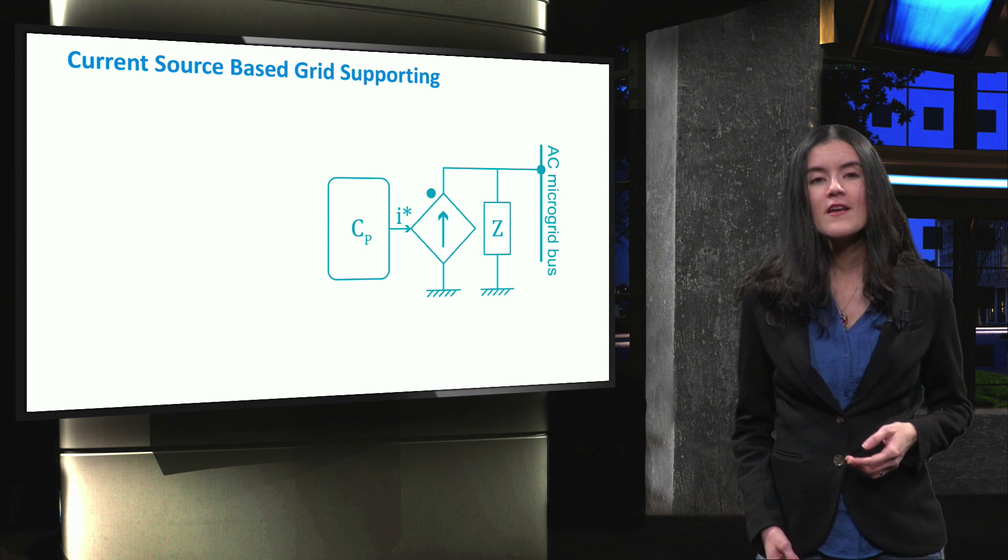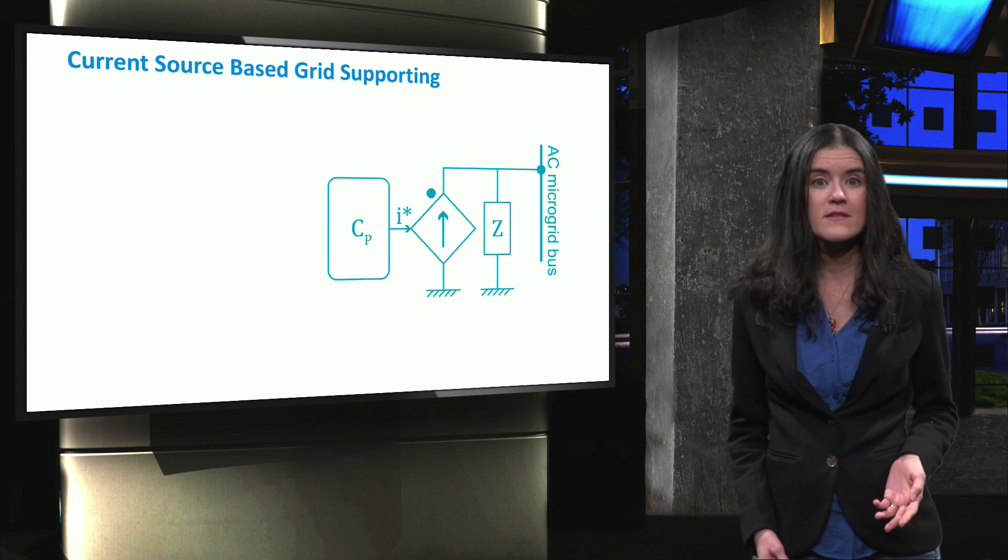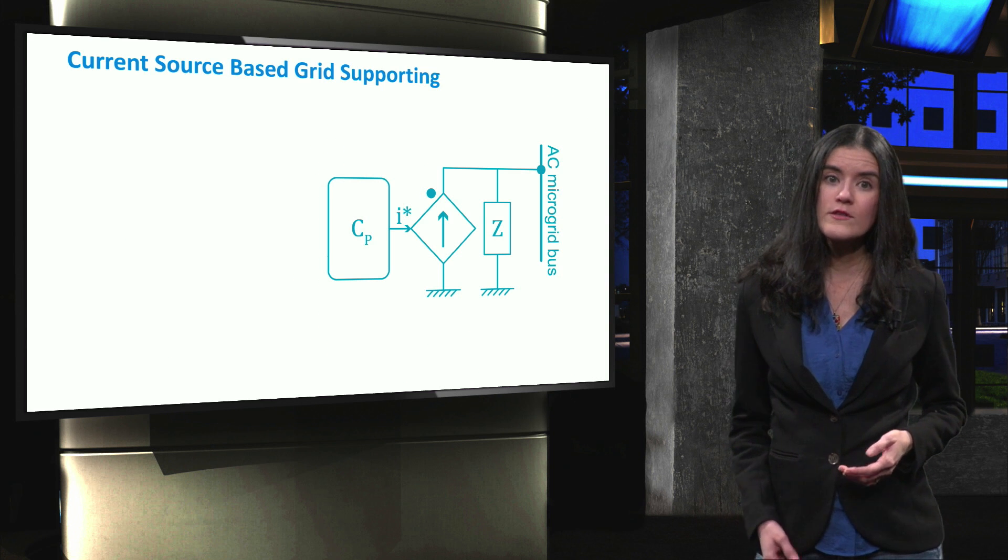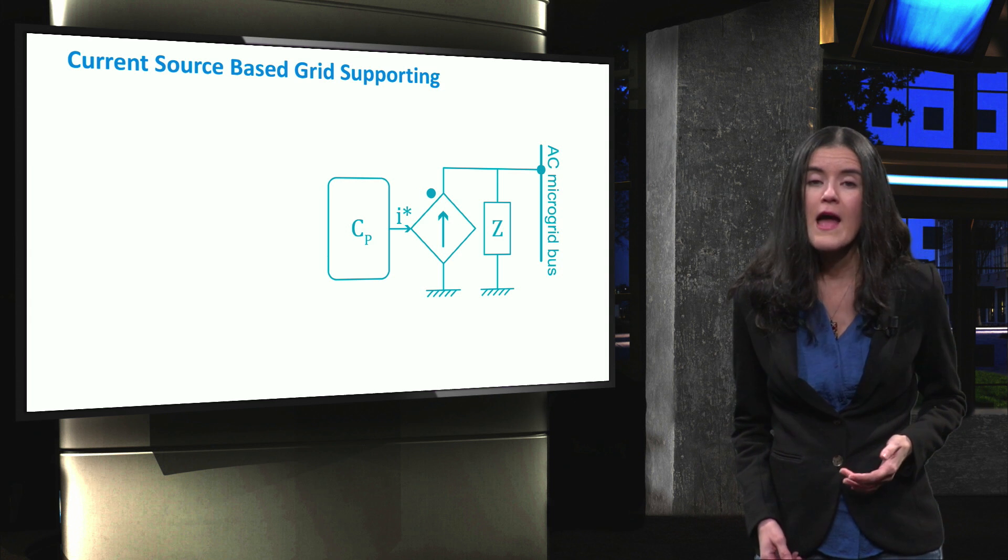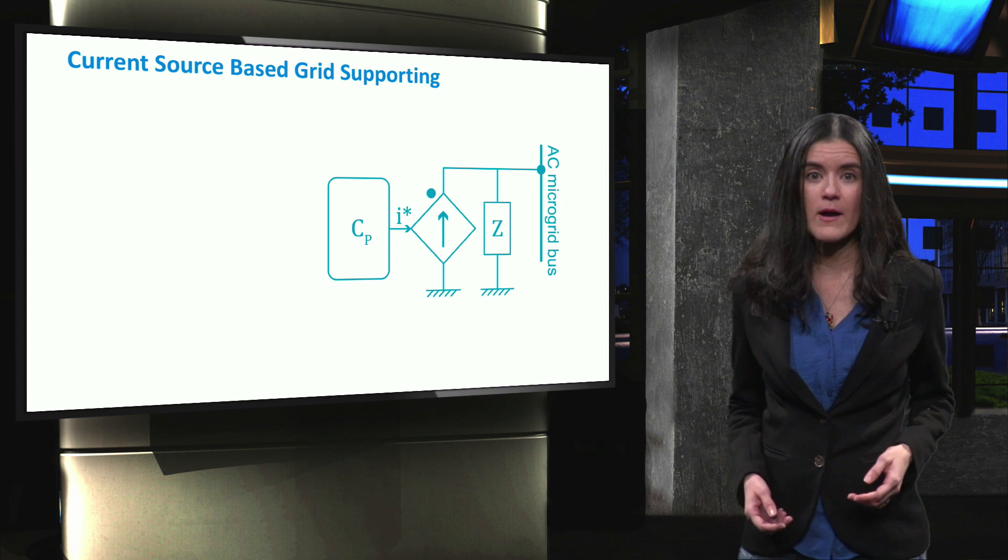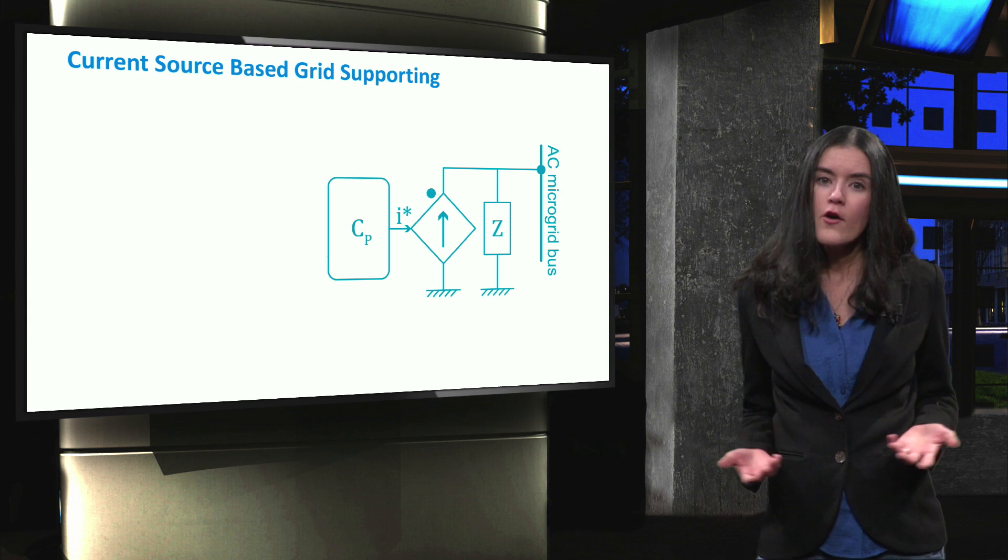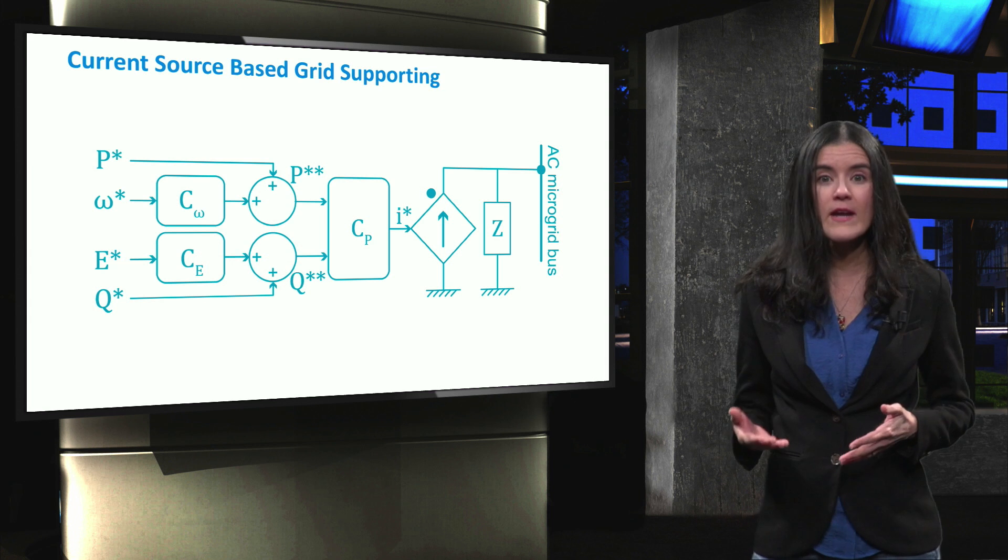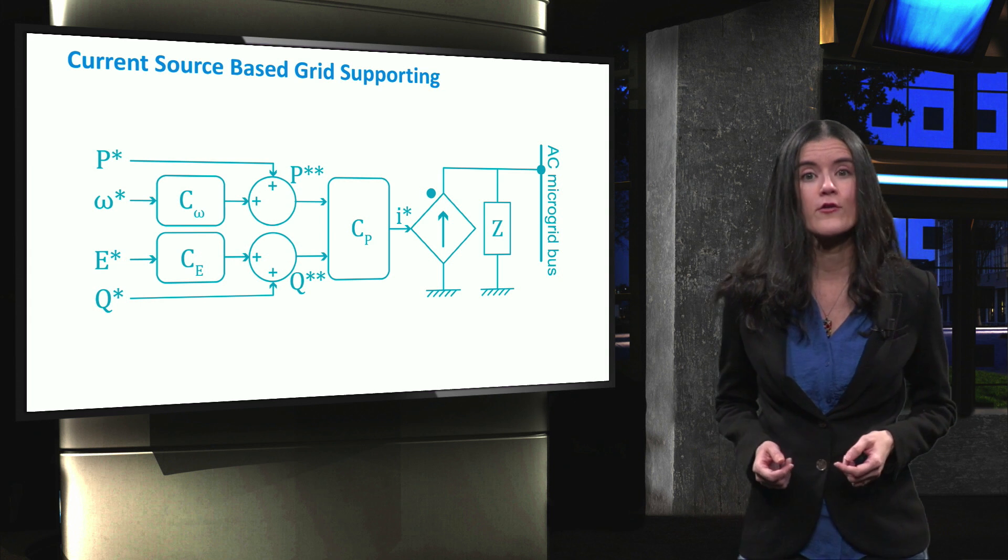As already mentioned, grid-supporting power converters can be divided into current source-based and voltage source-based converters. Grid-supporting converters are placed in between grid-feeding and grid-forming power converters, and their main objective is to deliver power values of active and reactive power to contribute to the regulation of the grid frequency and voltage. For example, a current source-based converter can deliver the active and reactive power set points to a distributed generator connected to the microgrid.